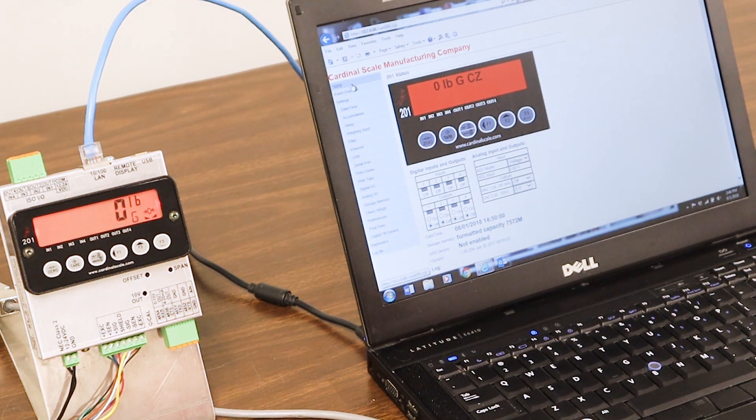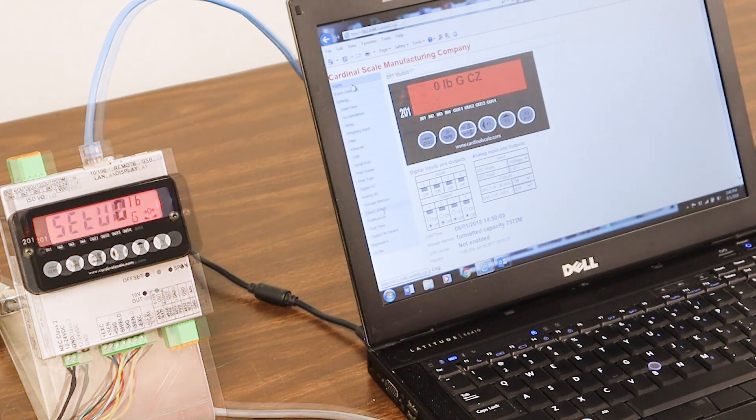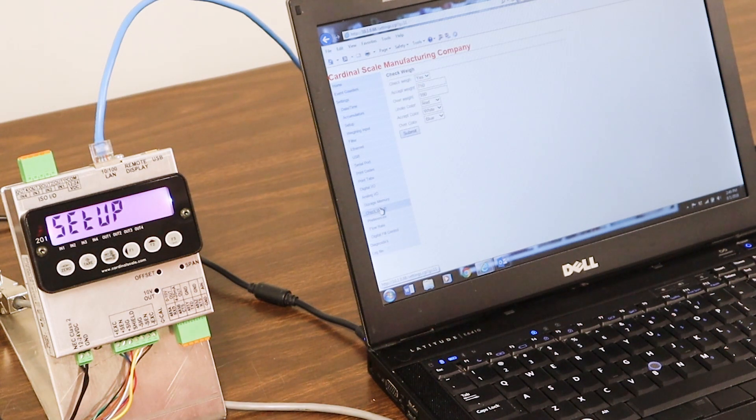Okay now we're going to talk about some of the features that you can utilize using the web-based PC browsing on the Cardinal 201 denrail mounted indicator. Checkway is a neat little feature to make the screen light up and accept your checkway colors. I have this currently set at 750 pounds at my accept weight and my overweight at 990.